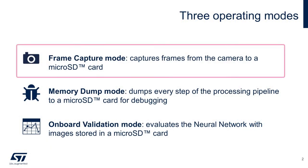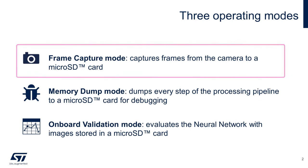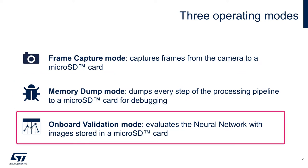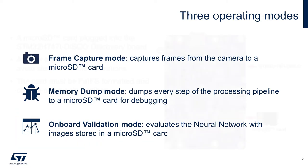The frame capture mode captures frames from the camera to a micro SD card. The memory dump mode dumps every step of the processing pipeline into a micro SD card for debugging, and the onboard validation mode evaluates the neural network with images stored in a micro SD card.